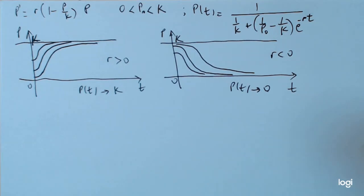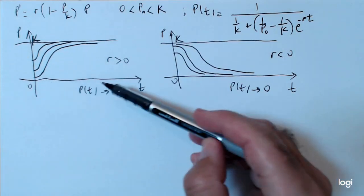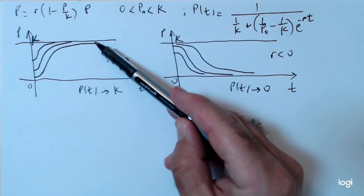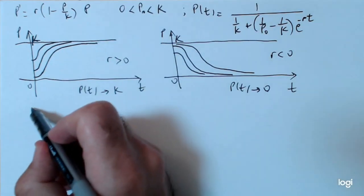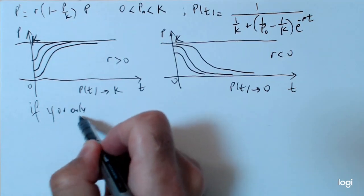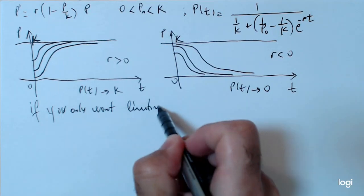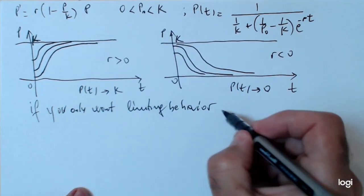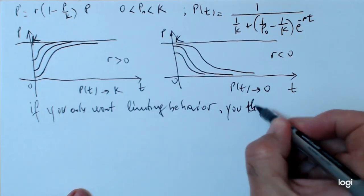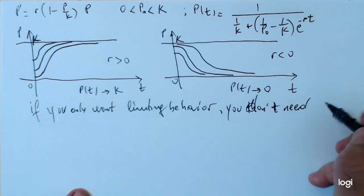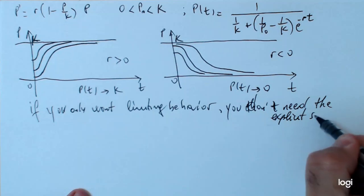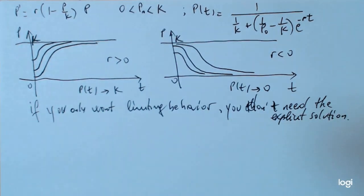And I should mention here that, again, if you don't care about what happens at any point in time t, but you only care about the limiting behavior, you don't need the explicit solution. So, if you only want the limiting behavior, which is what we want most of the time anyway in these models, then you don't need the explicit solution, p of t, you only need the phase line-up we did in the previous part. That's all of the beauties about the theory of differential equations. You can say a lot of things about solutions without actually solving for the explicit solution, which is rather fortunate because most of the time we cannot find that explicit solution.